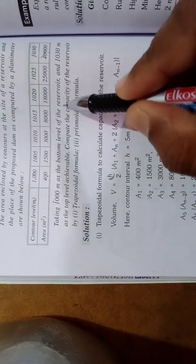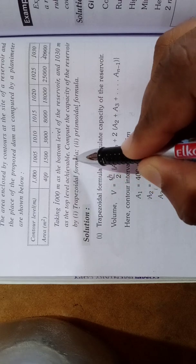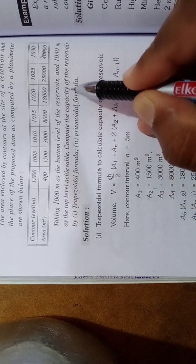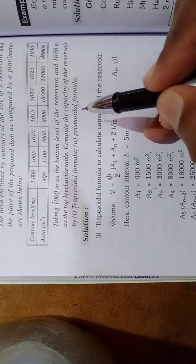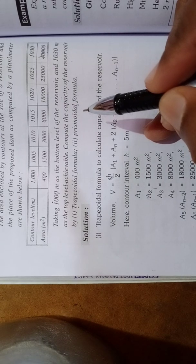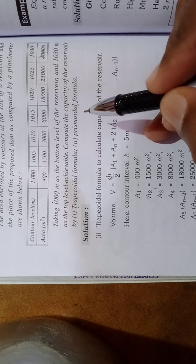Taking 1000 as the bottom level of the reservoir and 1030 as the top level achievable, compute the capacity of the reservoir by trapezoidal formula and prismoidal formula. Now I will draw one figure based on this data.